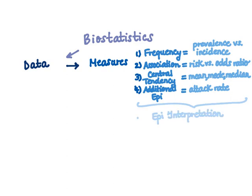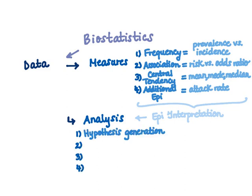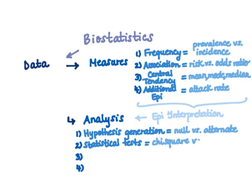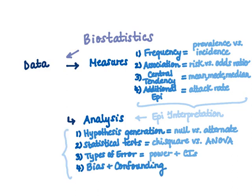All of which we'll look at in relation to interpreting our data set. From here we'll talk about data analysis, covering four points: number one, hypothesis generation — defining null versus alternate hypothesis. Number two, various statistical tests such as chi-square versus ANOVA. Number three, different types of error, defining power and confidence intervals. And number four, what it means to have bias and confounding within studies.